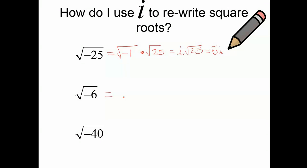What about the square root of negative 6? Well, same thing. We need to take out a negative 1, multiply that by a square root of 6. Well, the square root of negative 1, that's just i. And then, the square root of 6 doesn't simplify down at all. So, I can just leave that as i square root of 6.